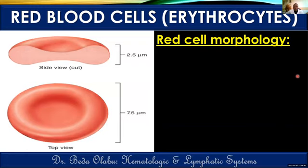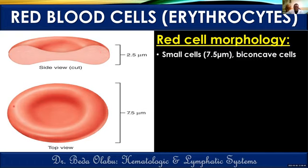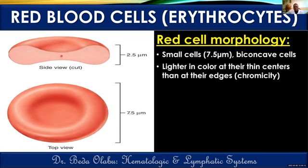Let's start with the morphology of red blood cells. They are very small, with a diameter of about 7.5 microns. They are biconcave cells with a very thin central part and relatively thick peripheral parts. Because the central part is thin, it contains less hemoglobin and appears lighter, while the thicker edges stain deeply. This brings us to the concept of chromicity.